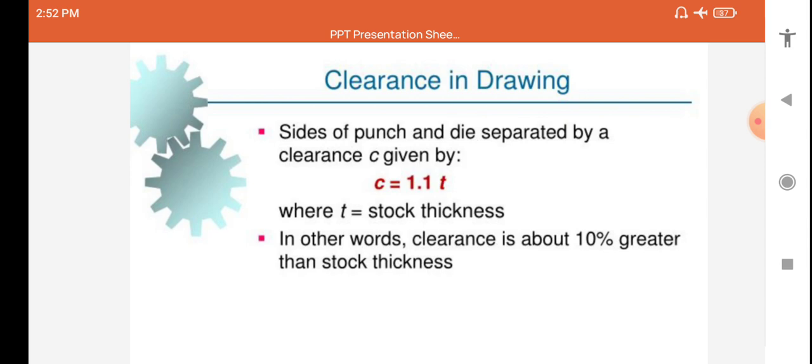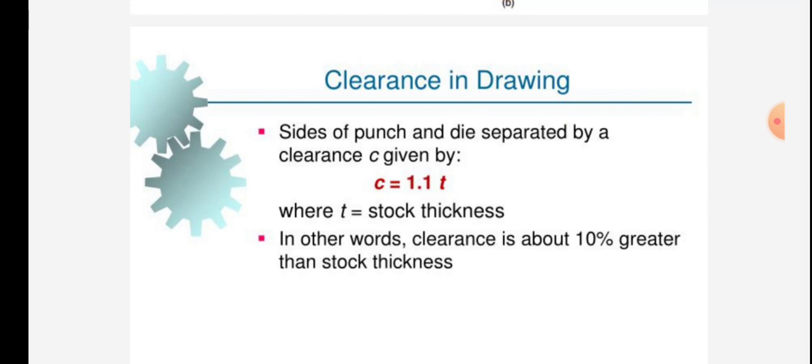Clearance in drawing: sides of punch and die separated by a clearance C given by C = 1.1t, where t is the stock thickness.